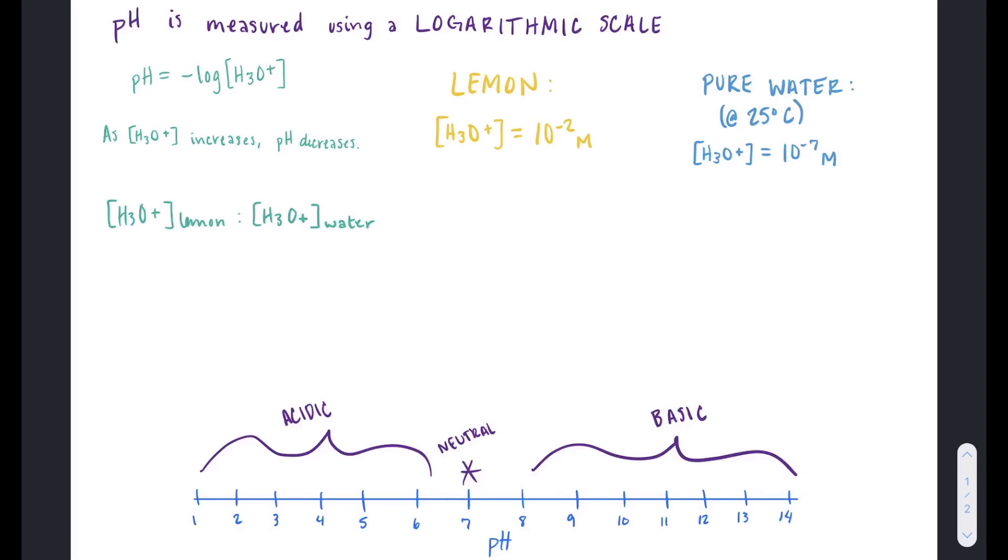Lemon juice has a molarity of hydronium ions of 10 to the negative second. You can write that another way as 0.01. If we put this number into the equation, the pH is 2.